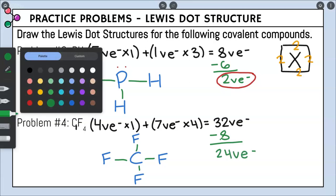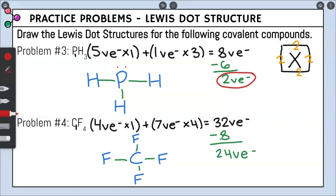We're going to use those 24 valence electrons as dots. One side of each fluorine is already taken by the bond, so there are only three sides of each fluorine's box available. Carbon has no available sides, so carbon will not get any dots.